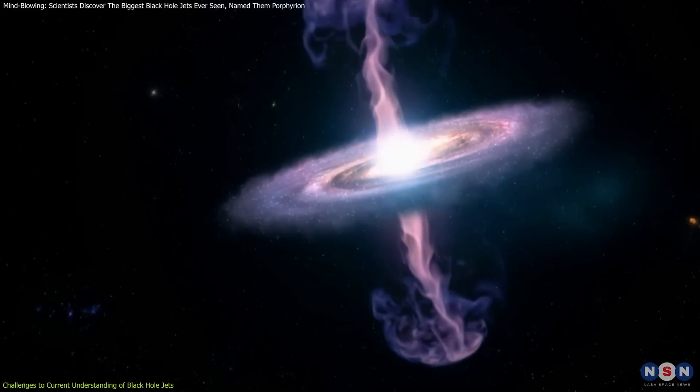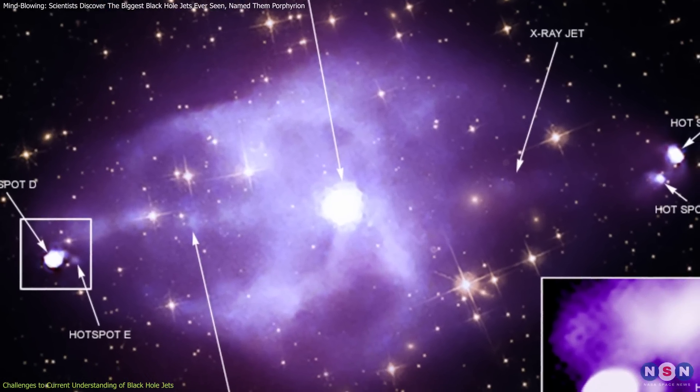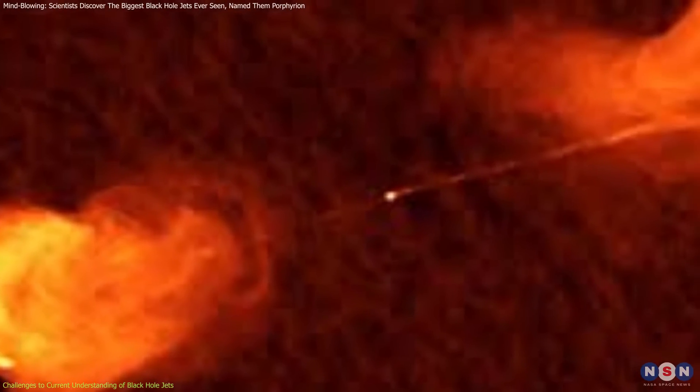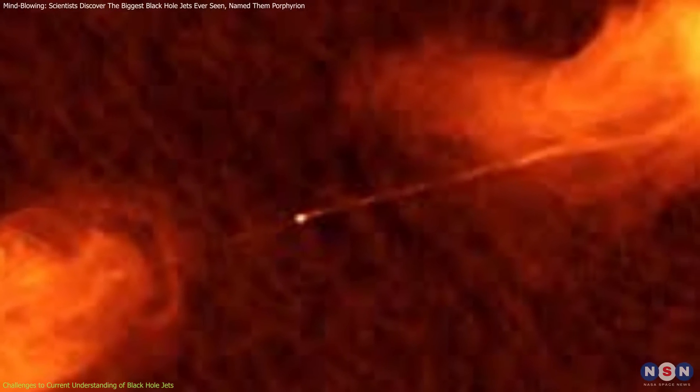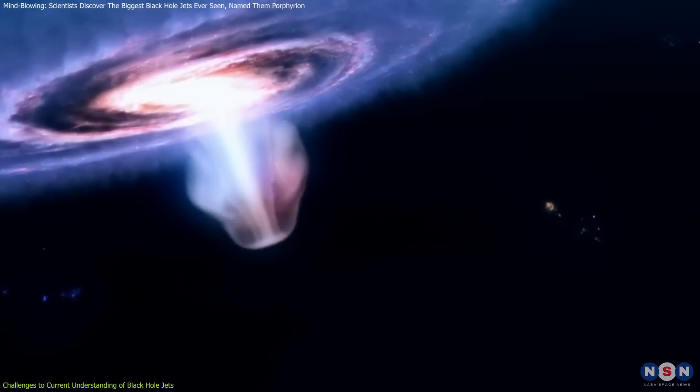A well-known example of another radiative-mode black hole is Cygnus A, one of the most powerful radio galaxies in the nearby universe. Cygnus A also demonstrates the ability of radiative-mode black holes to drive significant energy outflows, even though it primarily emits radiation rather than powerful jets.